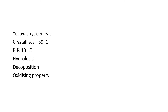Properties of Chlorine Dioxide. It is a yellowish green gas which crystallizes at minus 59 degree centigrade. It has boiling point 10 degree centigrade. Hydrolysis: Chlorine Dioxide is highly soluble in water where it exists in equilibrium with hypochlorous acid. The rate of hydrolysis is slow enough to allow the extraction of ClO2 with organic solvents such as CCl4, but the equilibrium constant ultimately favours the formation of hypochlorous acid.